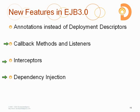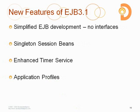Dependency injection was introduced in EJB 3.0 and enhanced in EJB 3.1. Each application server previously had its own JNDI naming syntax, but EJB 3.1 finally standardized how that naming structure worked, making dependency injection even more useful.